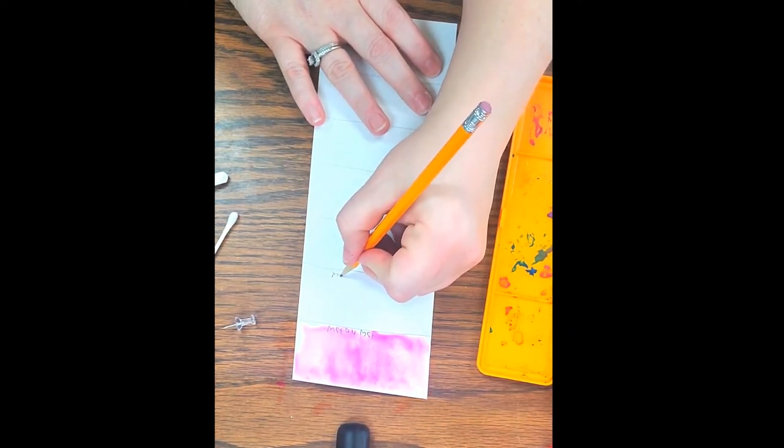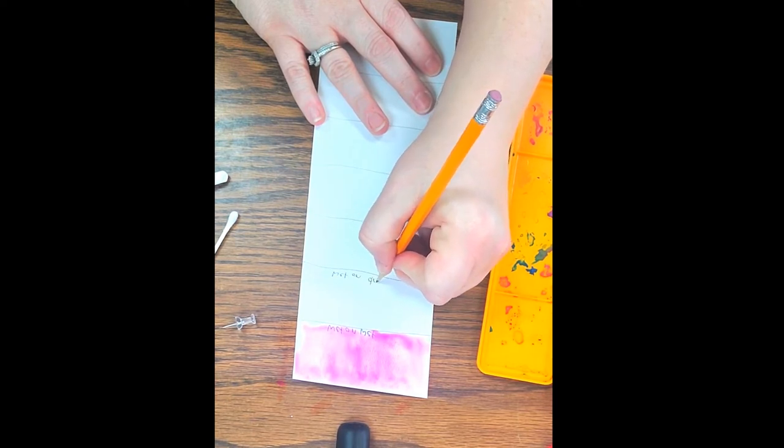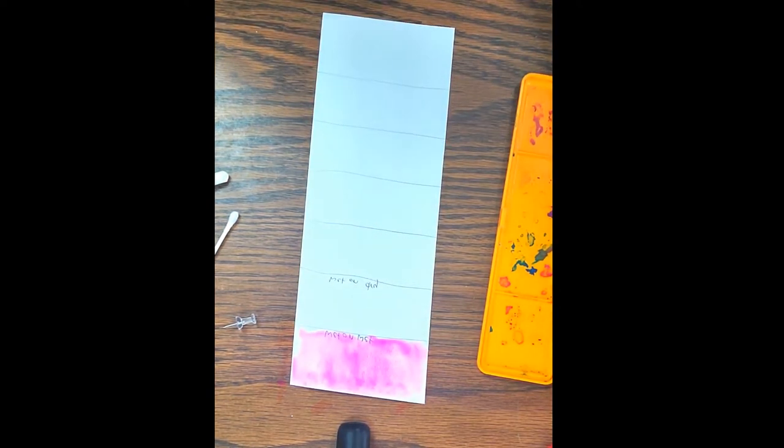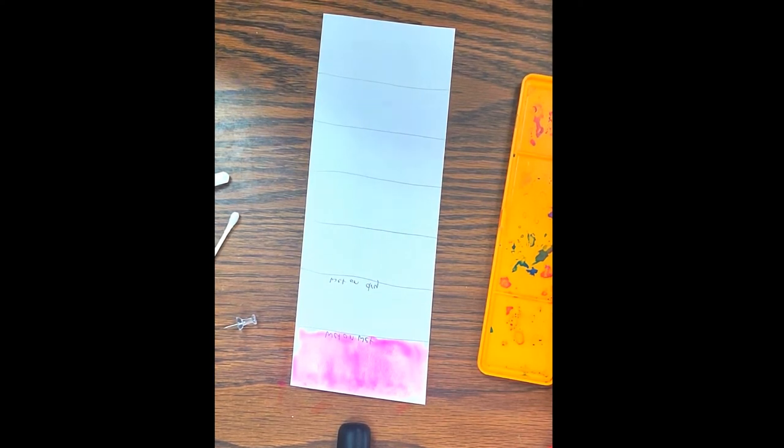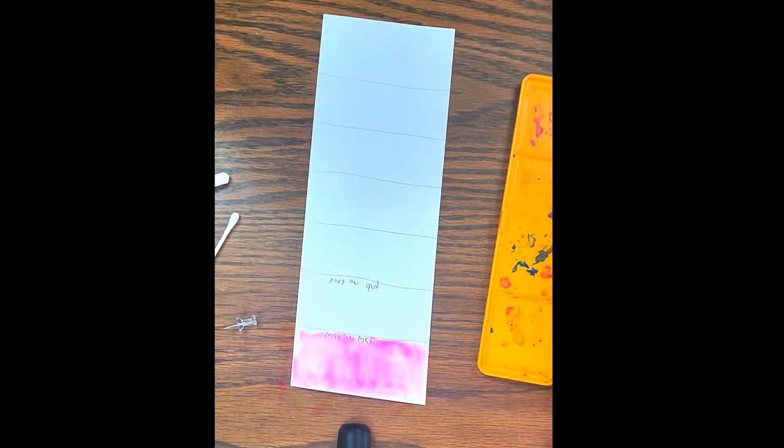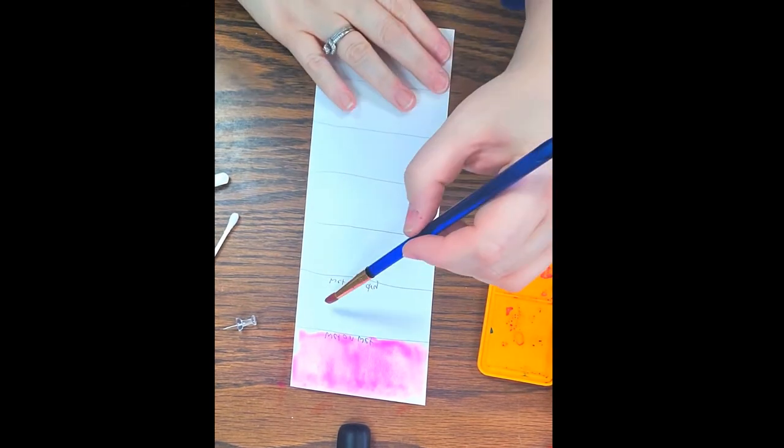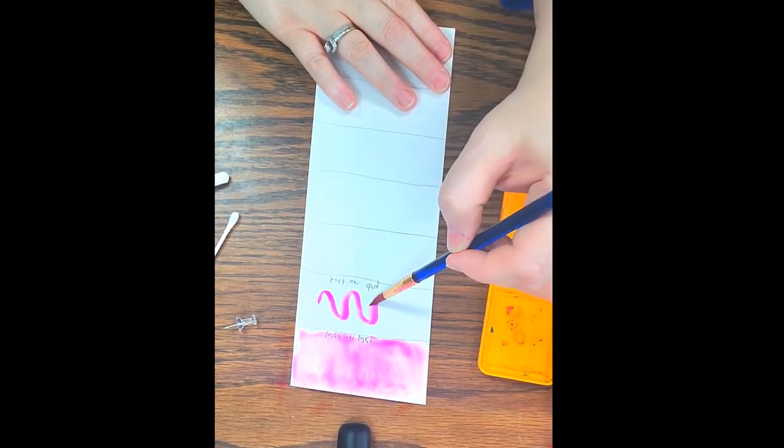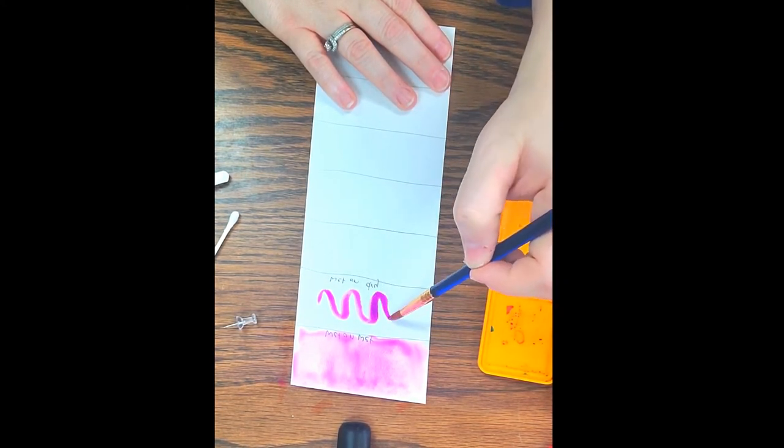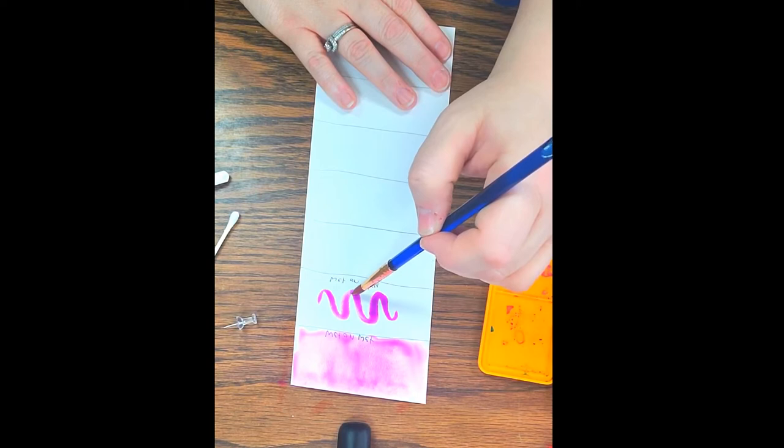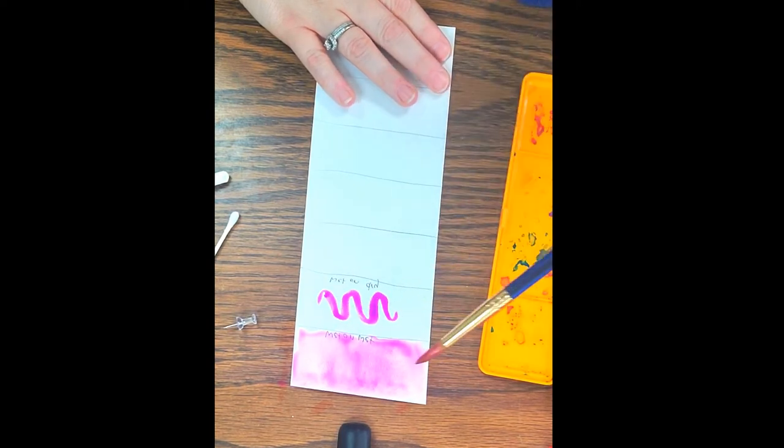The next one is called wet on dry. Okay, wet on dry. So what I'm doing is I have a wet paintbrush, I'm dipping it into my paint and swirling it around, and then all I'm doing is making marks on my paper. This is a good technique if you want dark color or very specific lines on your paper. Okay, that's wet on dry.